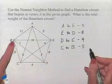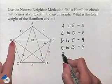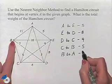And finally, to complete the circuit, we go from vertex B back to A. And that weight is 11.